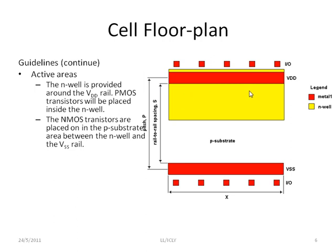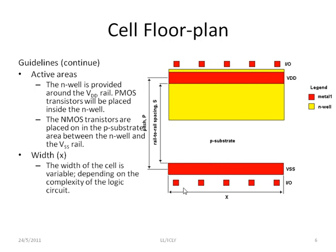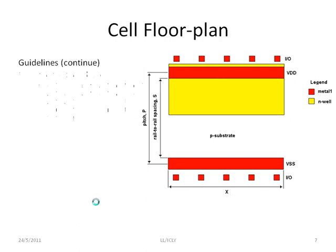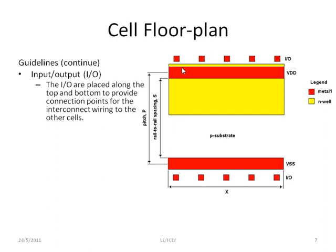The active area is provided around the VDD rail, meaning you have your N-well and then you have VDD inside your N-well. PMOS transistors are placed in the N-well. NMOS transistors are supposed to be placed in the P substrate. The width X is variable depending on the complexity of the logic. The input output ports are placed along the top and bottom to provide connection points for interconnect wiring to the other cells.